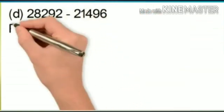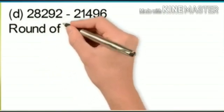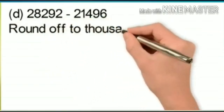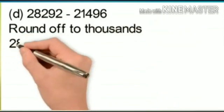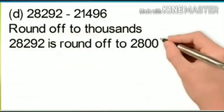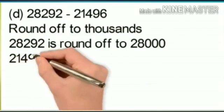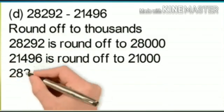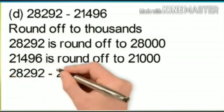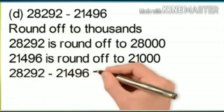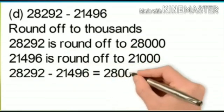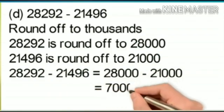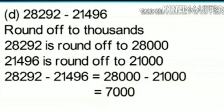For 28292 − 21496, rounded off to thousands: 28292 rounds off to 28000, and 21496 rounds off to 21000. Therefore, 28292 − 21496 ≈ 28000 − 21000 = 7000.